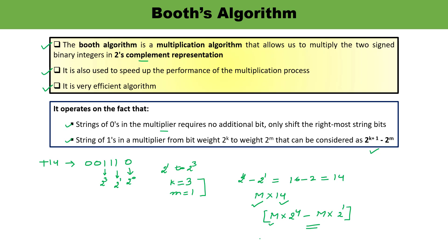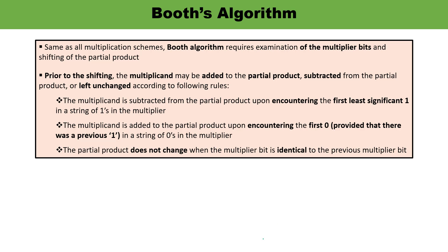The product can be obtained by shifting the binary multiplicand m four times to the left and subtracting m shifted left once. This algorithm is applied on signed-magnitude numbers. It requires examination of the multiplier bits and shifting the partial products. Prior to shifting, the multiplicand may be added, subtracted, or left unchanged, according to defined rules covered in the flowchart.